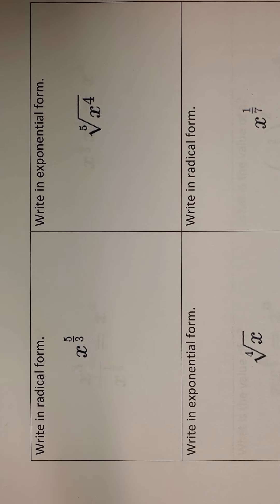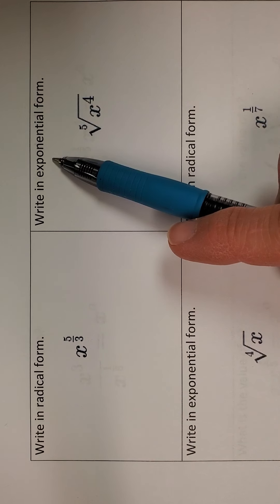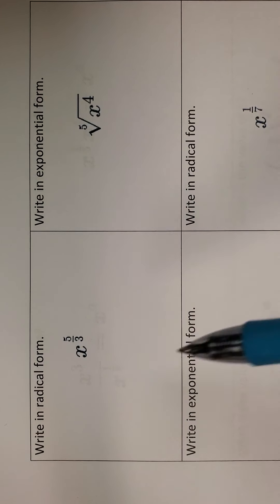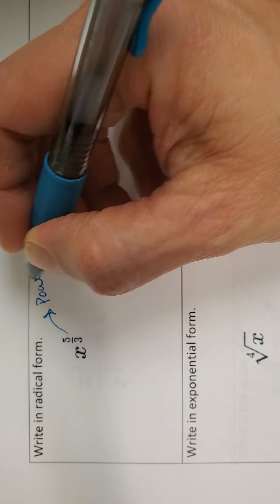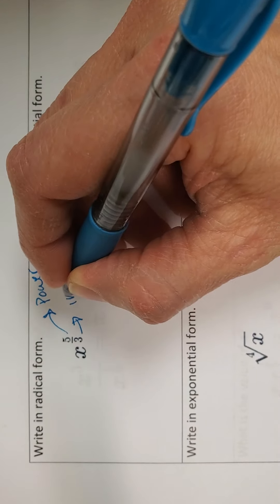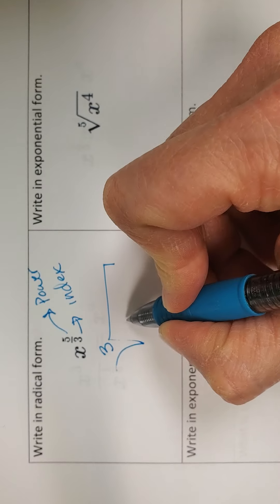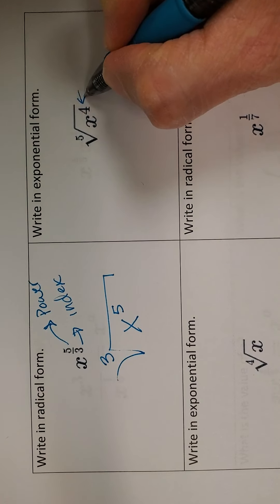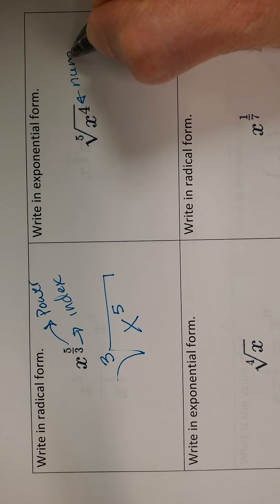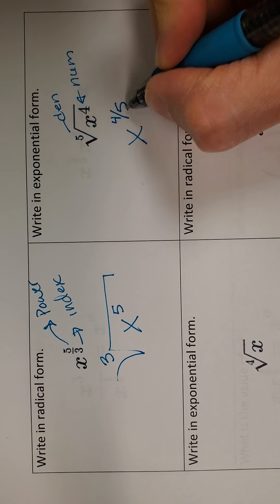The first thing we're going to do is remember how to change from radical form to exponential form. The top number is always our power, and the bottom number is always our index. So my index goes here and my power goes there. The numerator is my power and the denominator is my index, so it's going to be x to the four-fifths.